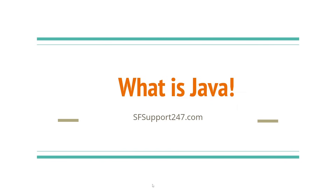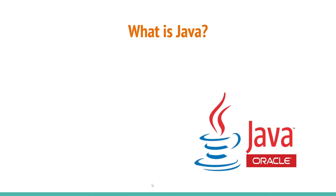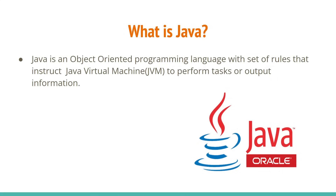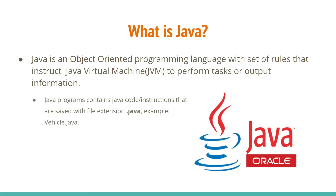Hey, good morning, good evening everyone. Welcome to today's course — we are going to discuss about Java. Java is an object-oriented programming language with a set of rules that instruct the Java Virtual Machine to perform tasks. The key takeaways from this point are object-oriented programming and Java Virtual Machine.